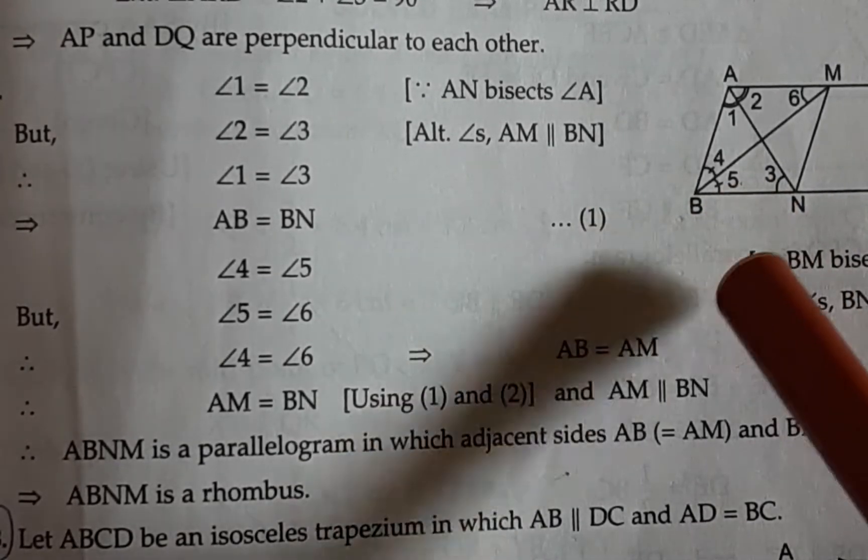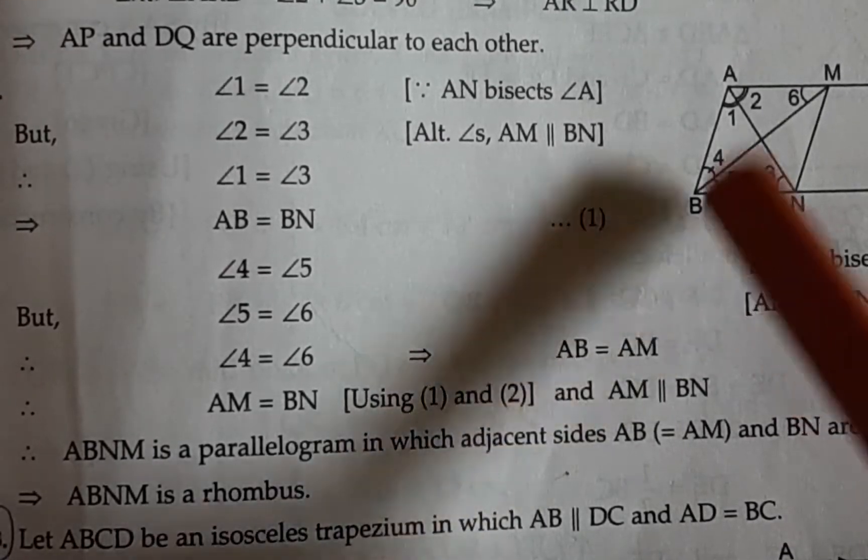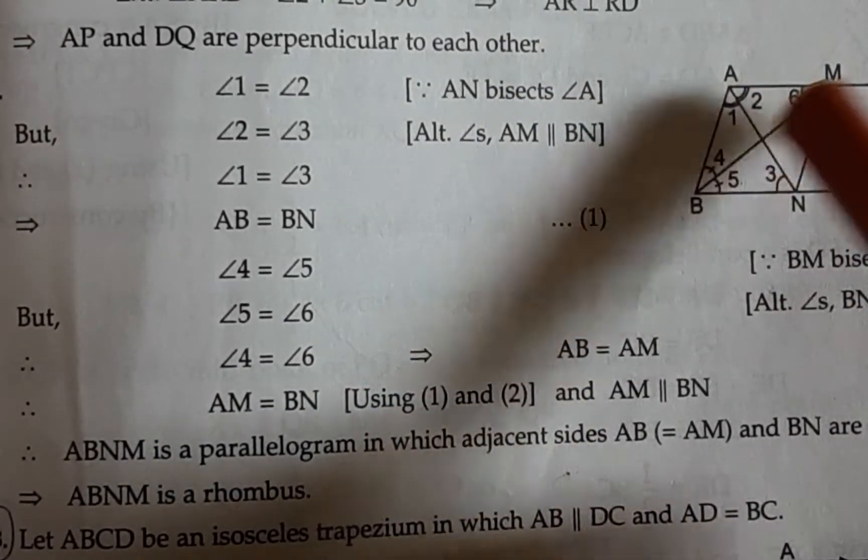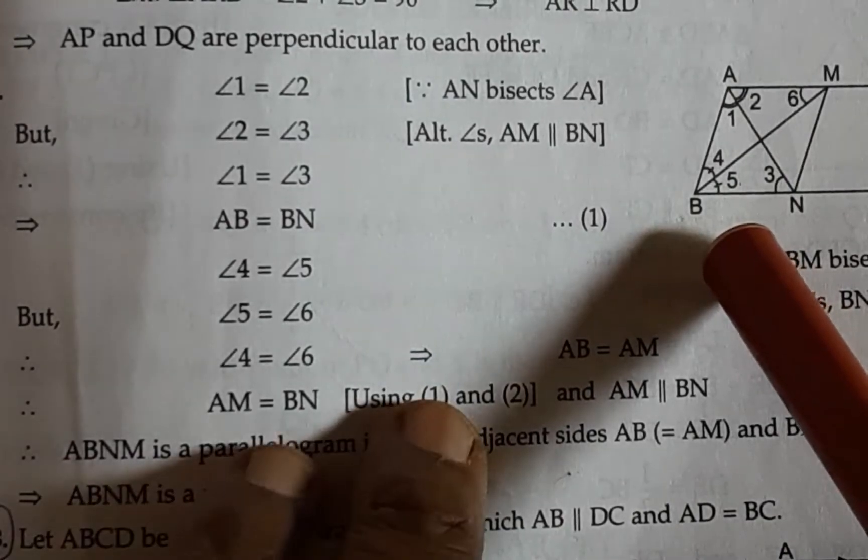But to establish that it is a rhombus, we have to prove that the diagonals bisect each other perpendicularly.